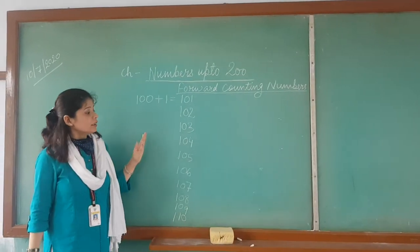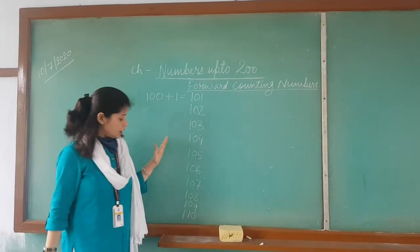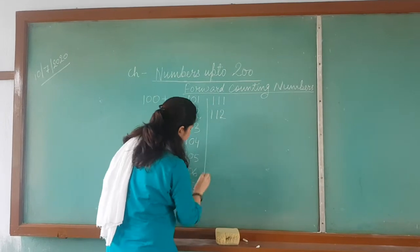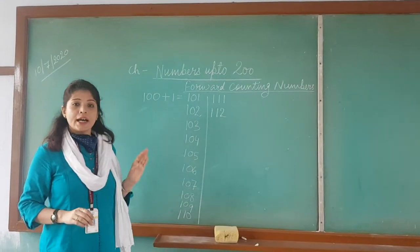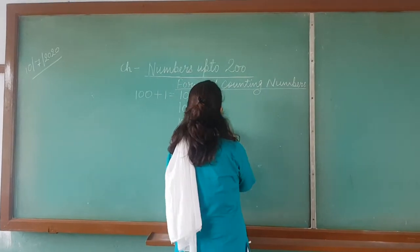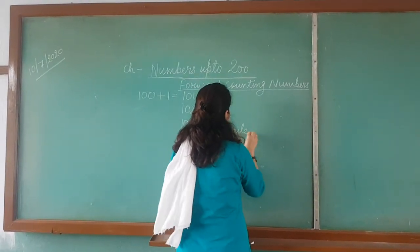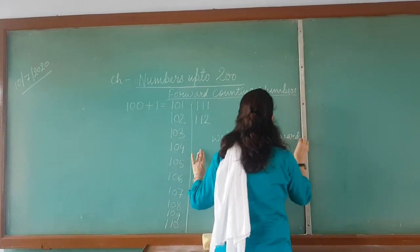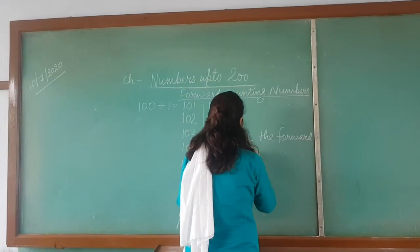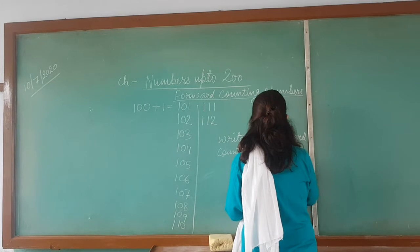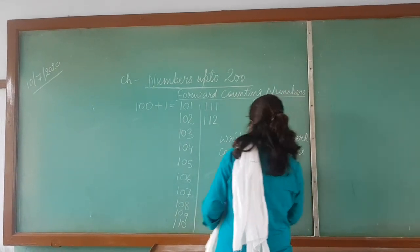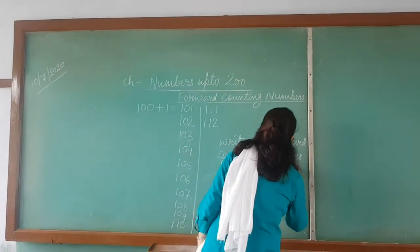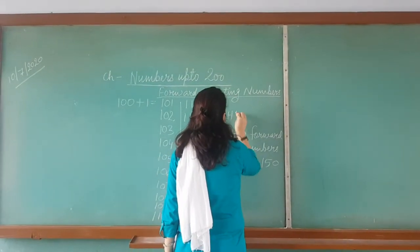In the same way, we will write till 150. How are we going to write it? It is 111, 112. We will write a marker number here, and in the same way we will write till 150. Write the forward counting numbers from 101 to 150. This is your homework.